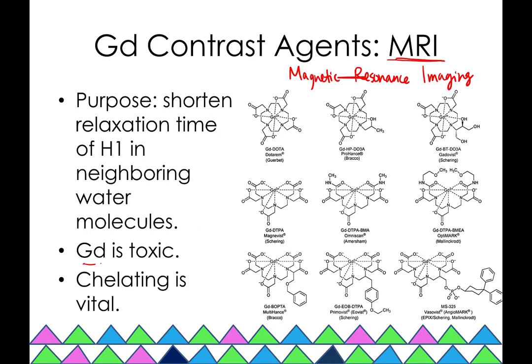Gadolinium is toxic, so what's really important is that all gadolinium contrast agents are chelated — every one of them has multidentate ligands, often with a denticity of eight. Chelating is crucial because gadolinium is toxic; it can stand in for other metal ions such as calcium in the body, which can cause problems.